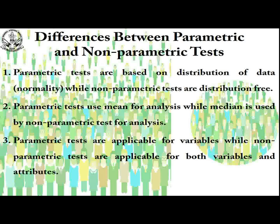For example, if the variable is gender, then attributes are male and female. Or when the variable is agreement, then attributes may be strongly disagree, disagree, neutral, agree, strongly agree — these are all the attributes of agreement. These examples help you understand variables versus attributes.